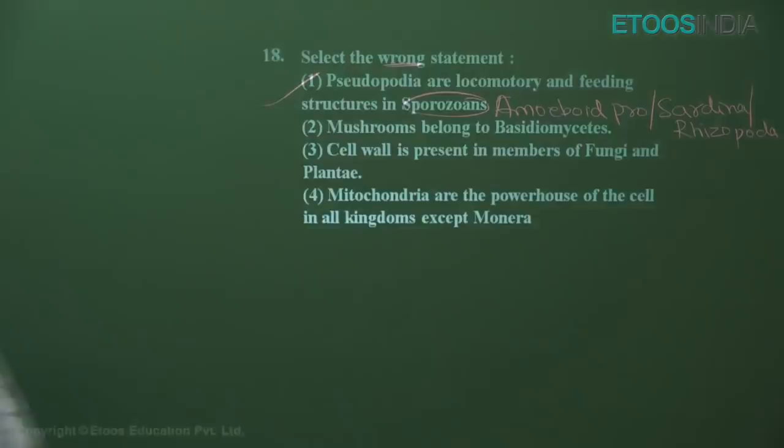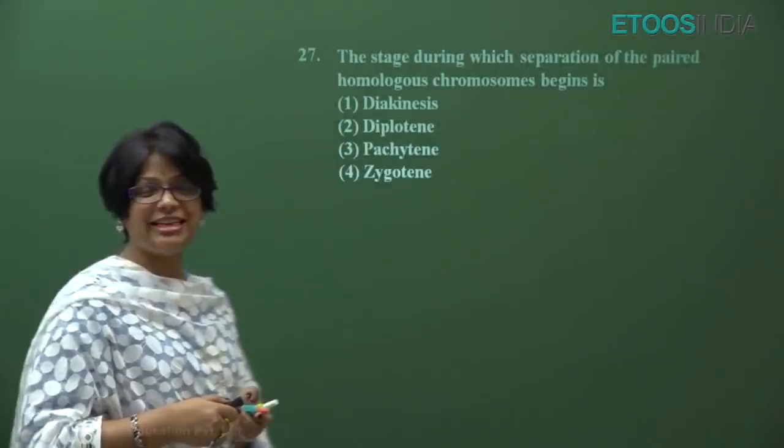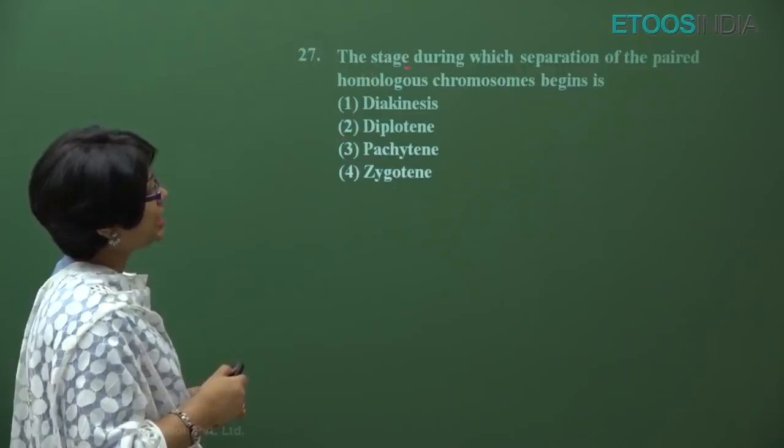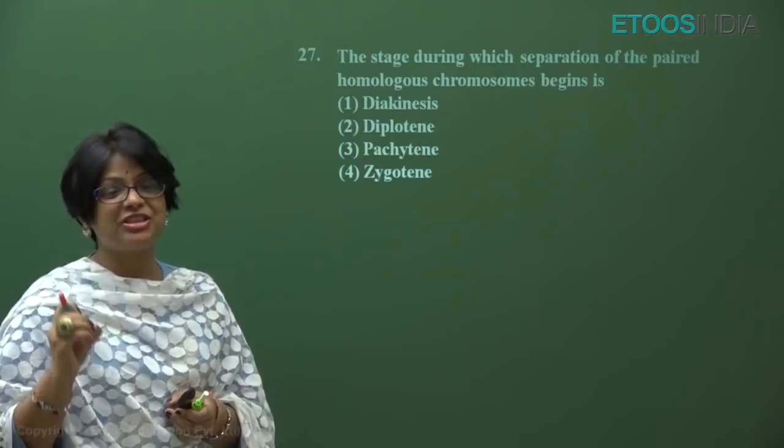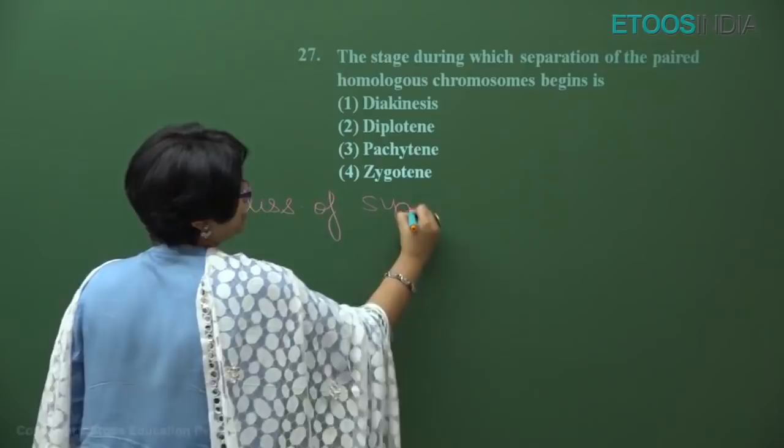Now let's see more solutions for NEET 2018 zoology. Question number 27, RR code: the stage during which separation of paired homologous chromosomes begins. This is a direct line from NCERT — it is clearly written that the diplotene stage is characterized by the dissolution of the synaptonemal complex.